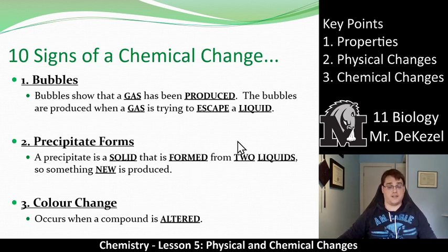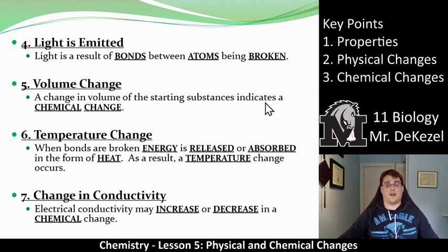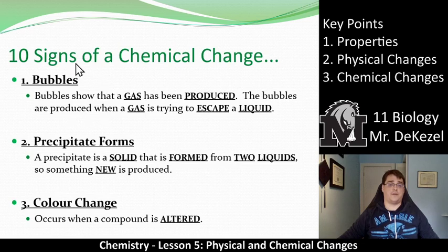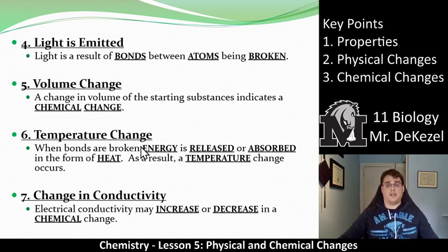When you're mixing two liquids together and the color changes, it's a chemical change. Number four: if light is emitted, that means you're releasing energy and bonds are being broken — that's a chemical change. Number five: if the volume changes, that would indicate that you have a gas being produced, and if you have a gas being produced, you have bubbles — that means it's a chemical change. Number six: if the temperature changes — when bonds are broken, heat is released by energy, and as a result the temperature changes. A temperature change means you have a chemical change.